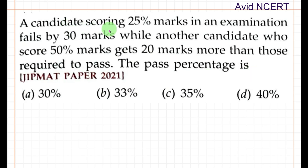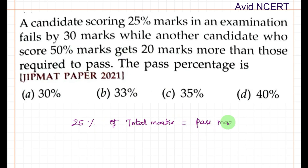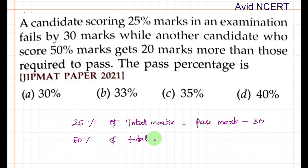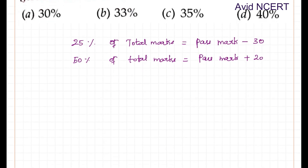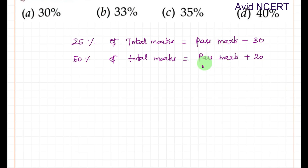From the first sentence, a candidate scoring 25 percent of total marks fails by 30 marks — that is, he gets 30 marks less than the pass mark, so it equals pass mark minus 30. From the next sentence, another candidate scoring 50 percent of total marks gets 20 marks more than the pass mark, which is pass mark plus 20.